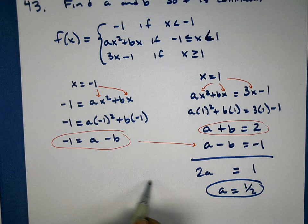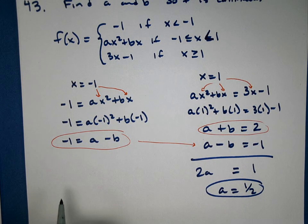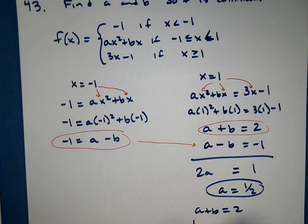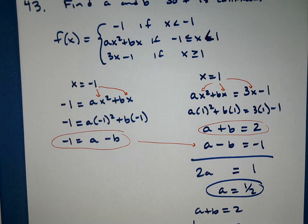And I can plug that back in over here or over here, either one. Kind of like this one, A plus B equals 2. If I put this half in and subtract, I'll find that B equals 1 and a half, or 3 halves.